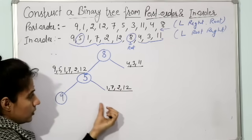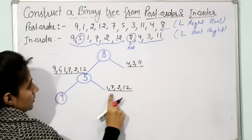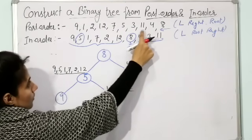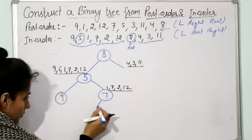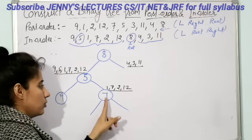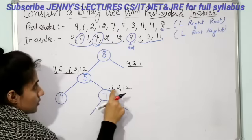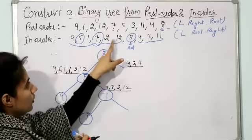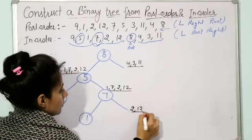Out of elements 1, 7, 2, and 12, find the root. Go to post-order, scan from right to left — 7 is coming first out of these elements. So 7 would be the root of the right subtree of 5. Now locate 7 in in-order: 1 is to the left of 7, so write 1 to the left. And 2 and 12 are to the right of 7, so write 2 and 12 to the right.